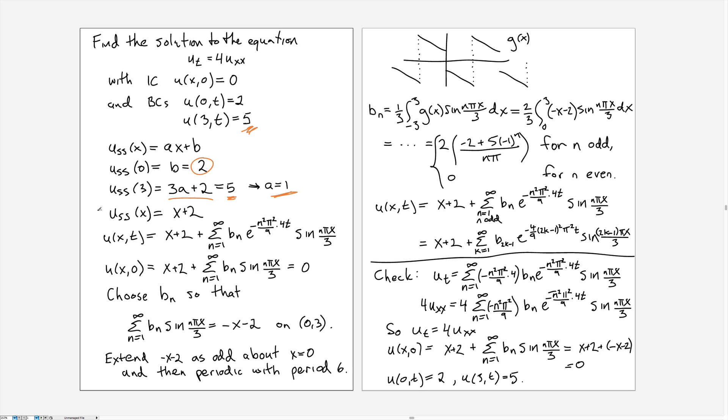So we now know that the steady state has to be x + 2, and now the general form of the solution, because it's a Dirichlet boundary condition, will be the steady state x + 2 plus a sine series.